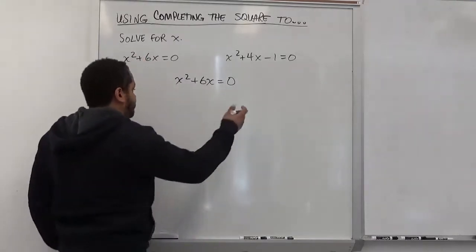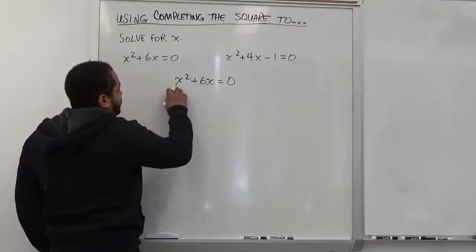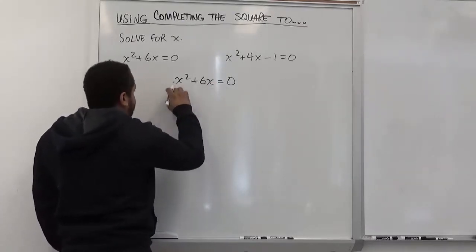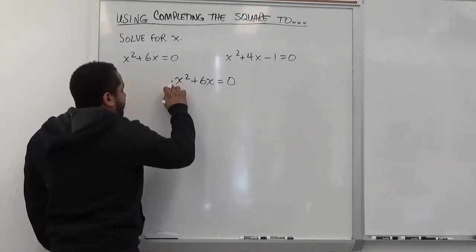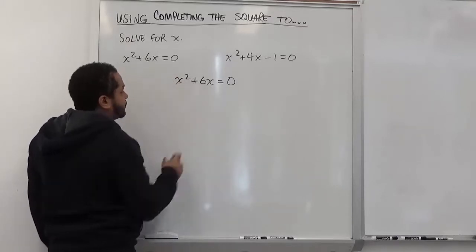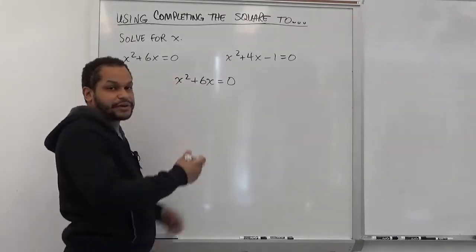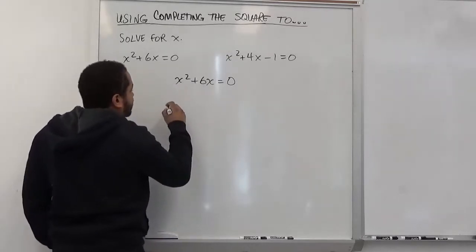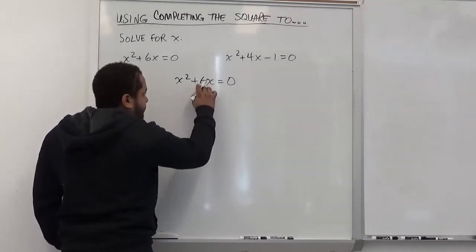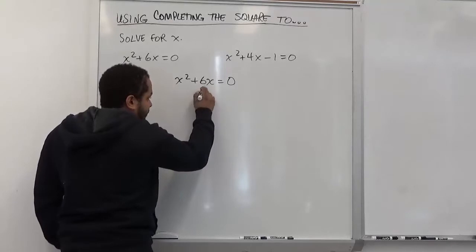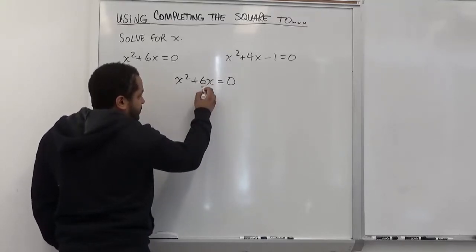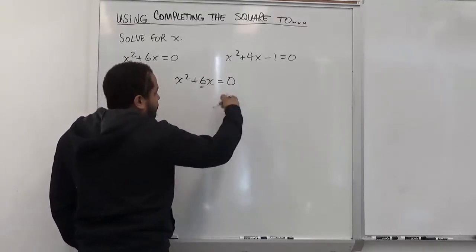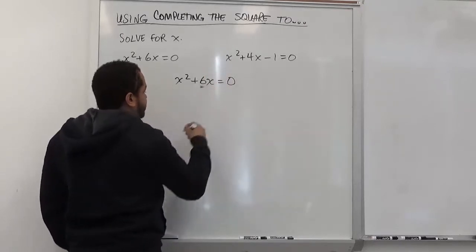So this makes the process pretty simple. When completing the square, whether or not we have that constant, we always want to first factor out the coefficient of the x squared term. In this case it has no x squared coefficient, which makes our lives a lot easier. What we're going to do then is take half of the middle term — the coefficient of the middle term, which is positive 6 in this case — and we're going to add the square of half of the middle term to both sides.